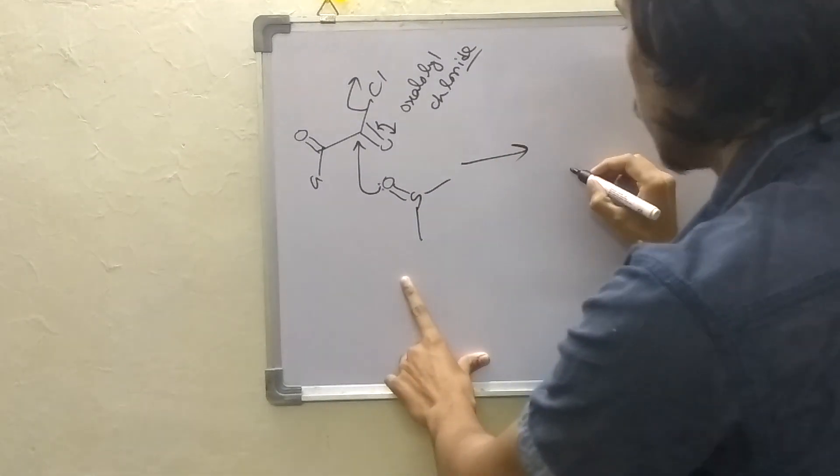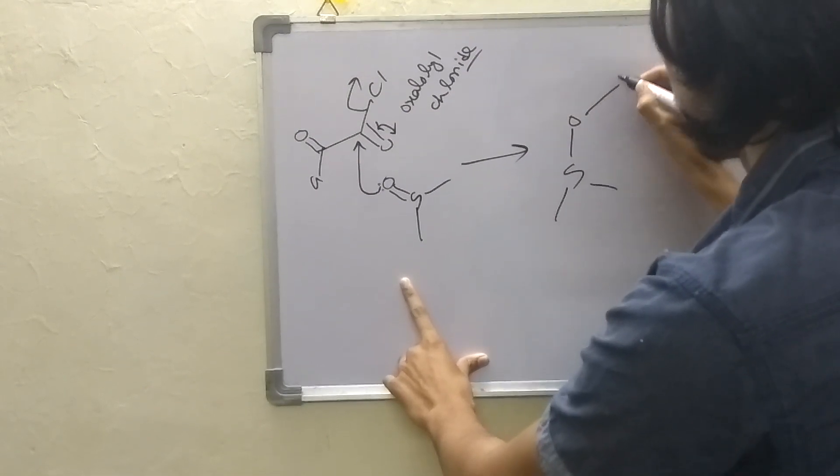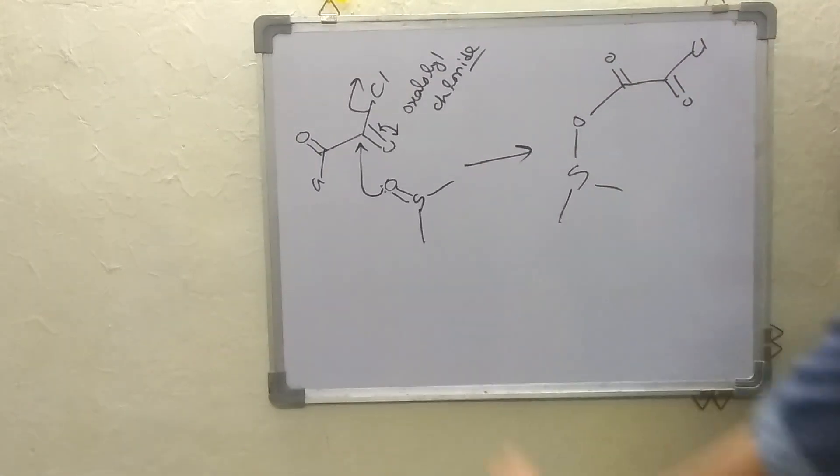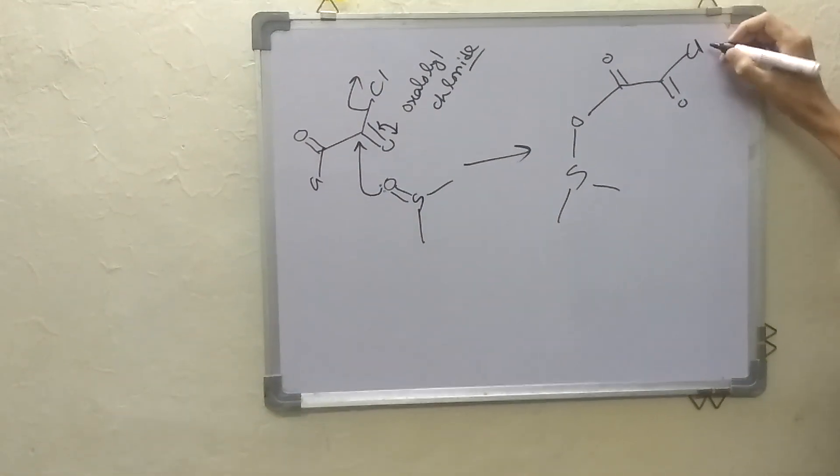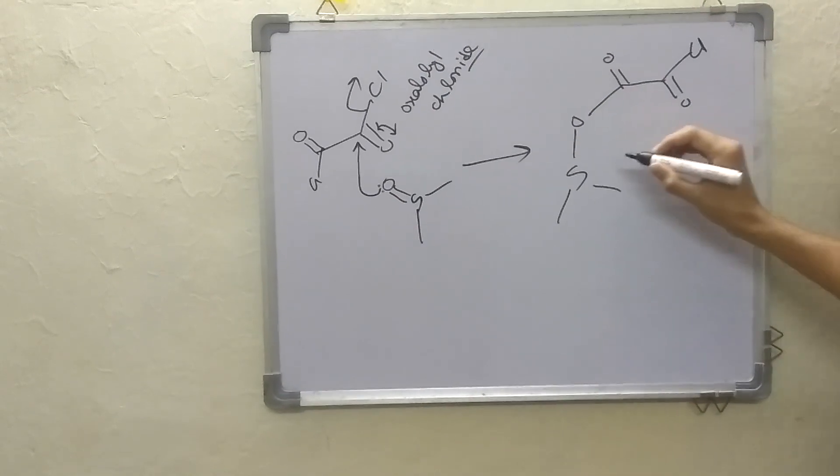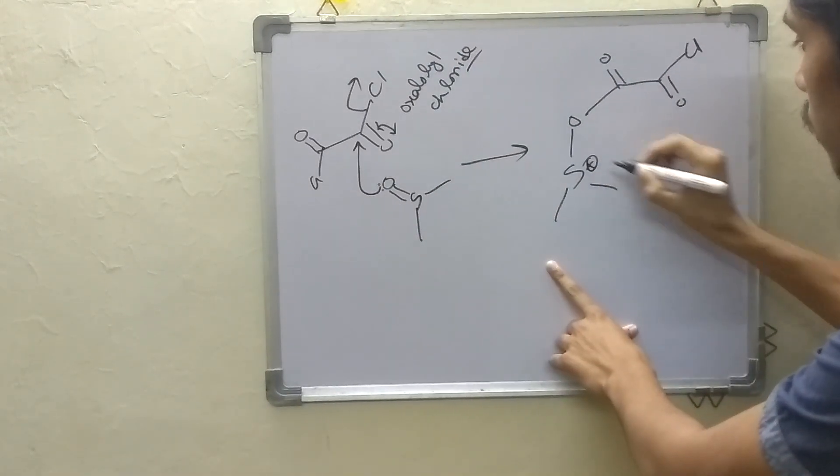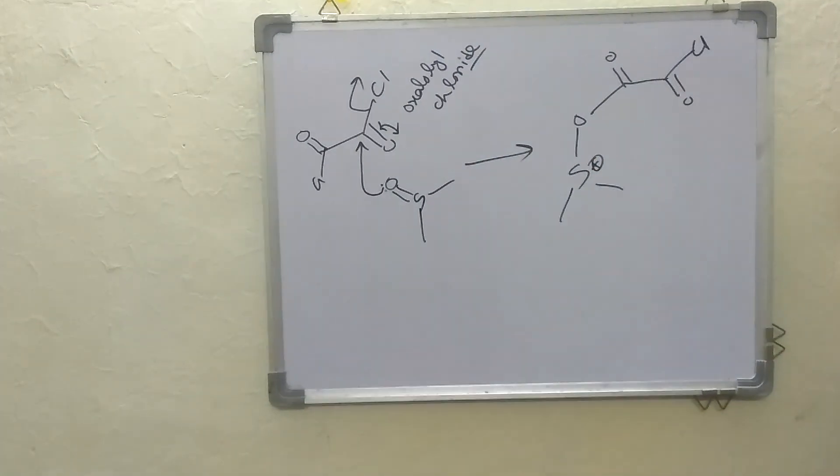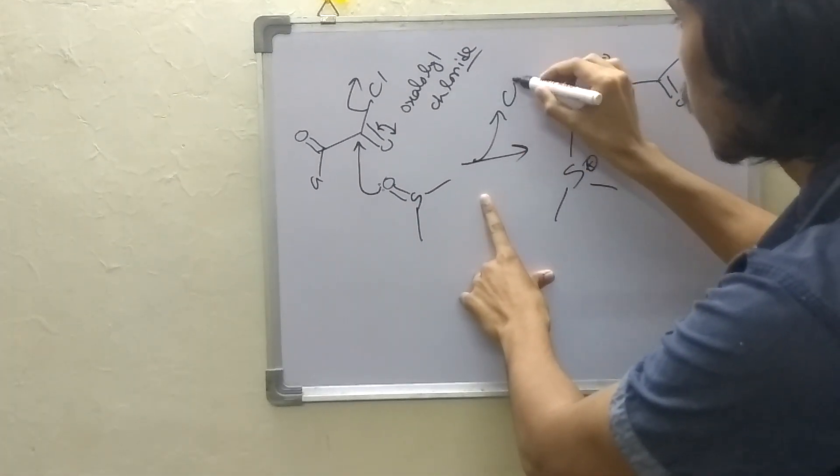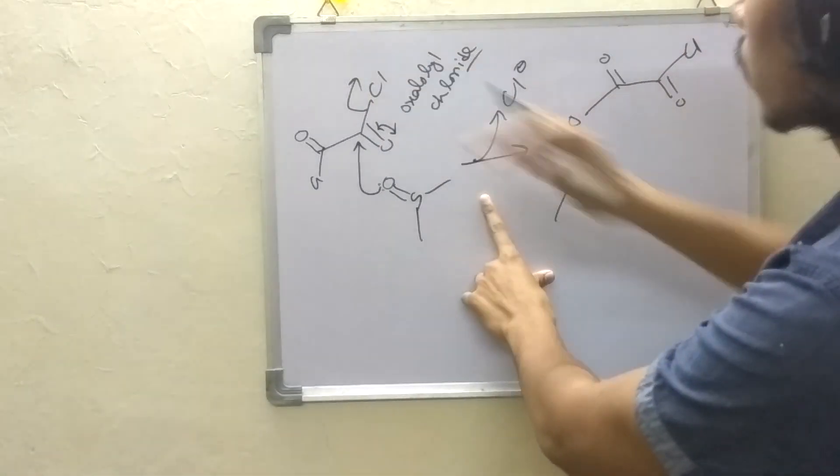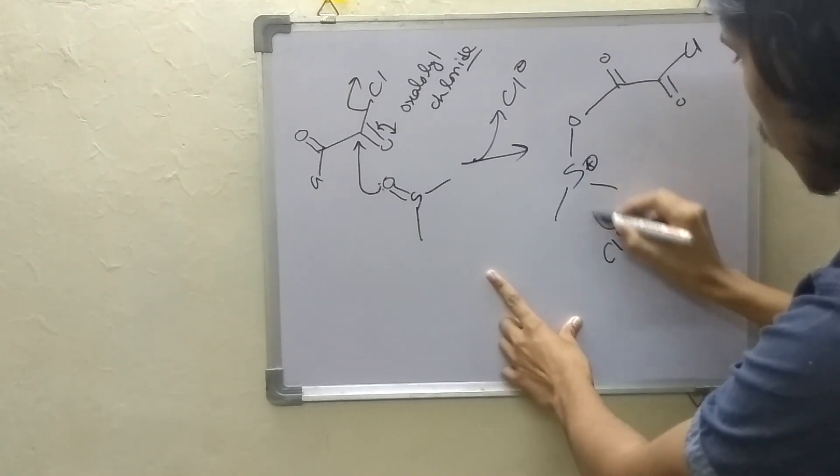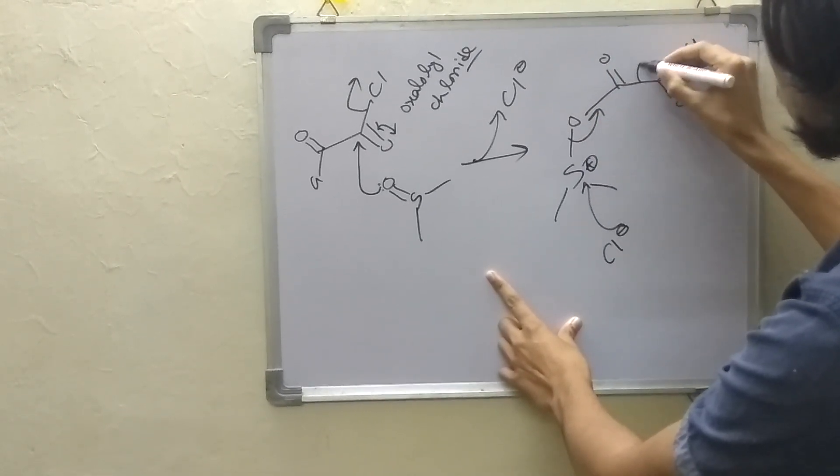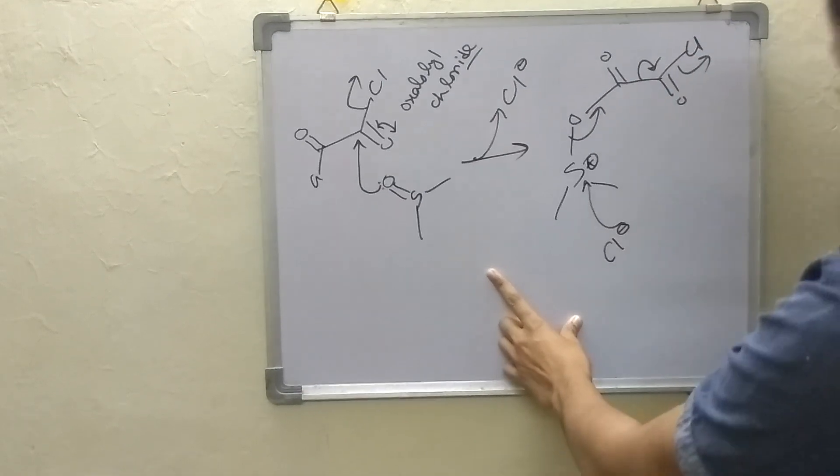It will give this one. Now there will be a positive charge here because this oxygen lone pair is involved here so there will be positive charge. Now in this state a chloride is removing, so this chloride can attack here and now this oxygen will go here, this will push here and this chloride will be removed.